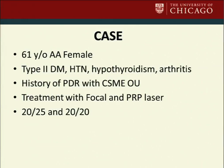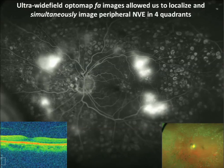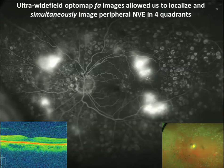Let me present one quick case to demonstrate the value of ultra-wide field imaging in clinical practice. This is a 61-year-old African-American female with type 2 diabetes, hypertension, hypothyroidism, and arthritis, with a history of proliferative diabetic retinopathy with macular edema in both eyes, and a history of focal and PRP lasers in the past. When I examined the patient in the clinic, we saw just one small area of active neovascularization along the inferotemporal arcade. But when we did wide-field imaging, this patient had four quadrants of neovascularization. With conventional seven-field fluorescein angiography, the fluorescein may pass in and out of areas and we may not even be able to image them. The ability to simultaneously image 200 degrees of the back of the eye can be very beneficial.